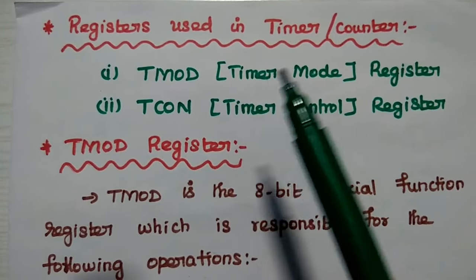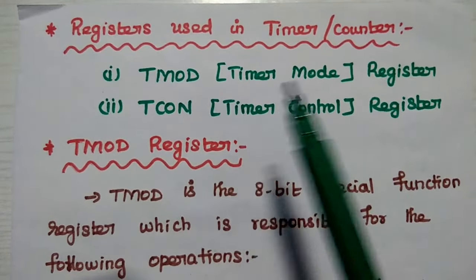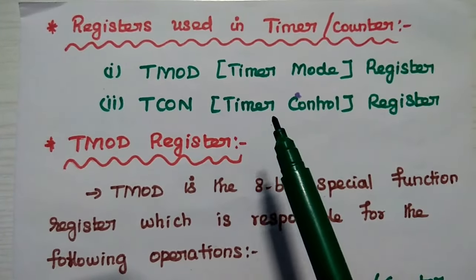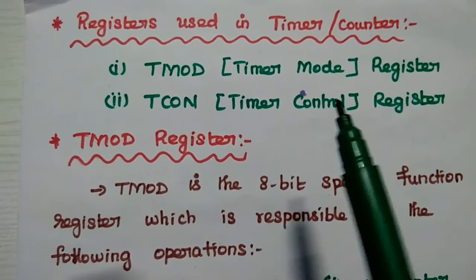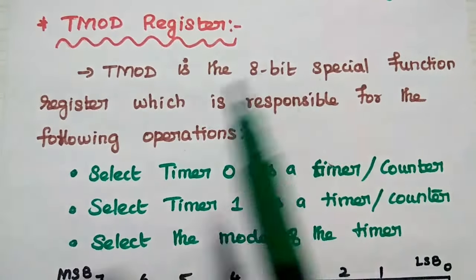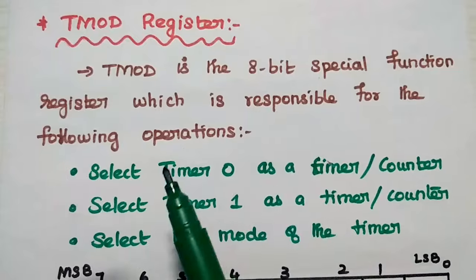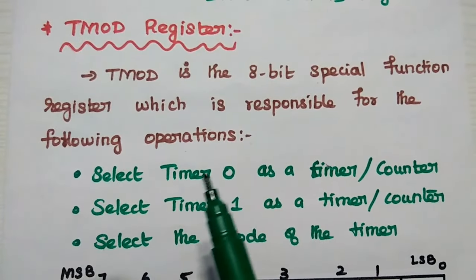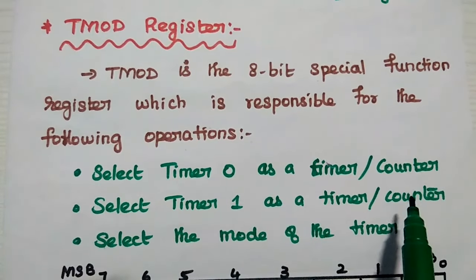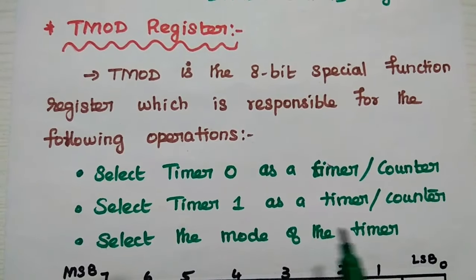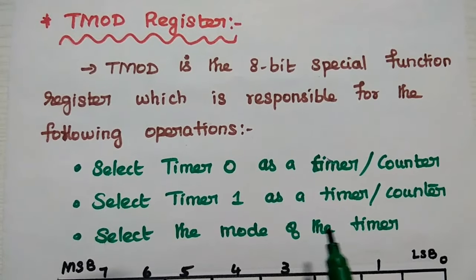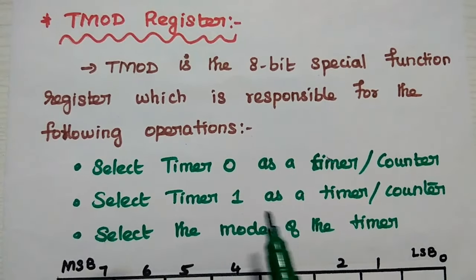There are two registers used in timer circuits. The first one is the TMOD register, that is the timer mode selection register. The second one is the TCON register, that is the timer control register. The TMOD register is an 8-bit special function register responsible for selecting Timer 0 or Timer 1 as a timer or counter, and also for selecting the mode of the timer. AT51 timers have four types of operating modes, and we can select the mode based on this TMOD register.